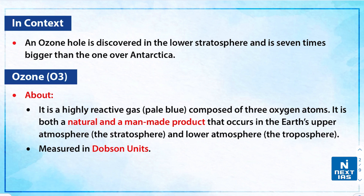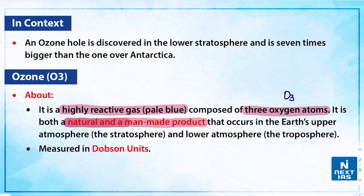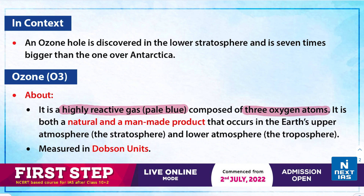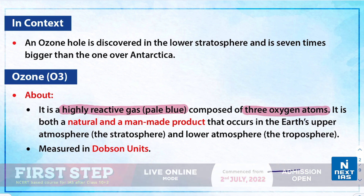First of all, ozone is a highly reactive gas that is pale blue in color. It is composed of three oxygen atoms, represented by O3. It is both a natural and a man-made product that occurs in the Earth's upper atmosphere — known as the stratosphere — and also in the lower atmosphere, known as the troposphere.